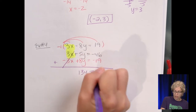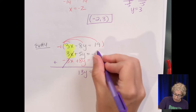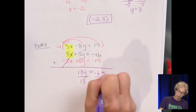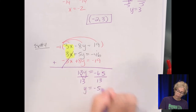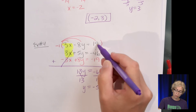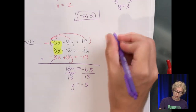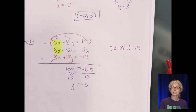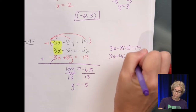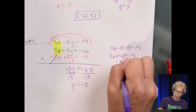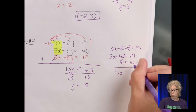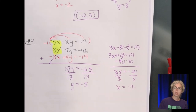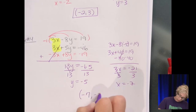Adding the two equations, the x terms cancel. 5y plus 8y gives 13y, and the right side is negative 65. Divide by 13, and y equals negative 5. Going back to the original top equation: 3x minus 8 times negative 5 equals 19, so 3x plus 40 equals 19. Subtract 40, giving 3x equals negative 21. Divide by 3, and x equals negative 7. Written as a point, the answer is (negative 7, negative 5).